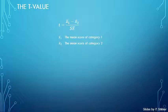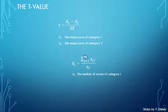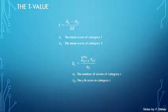The mean itself has a formula where N_i represents the number of scores in that specific category, and X_{ji} represents the j-th score in that specific category. In order to calculate the t-value we would first need to calculate the means, which is done on the next slide.